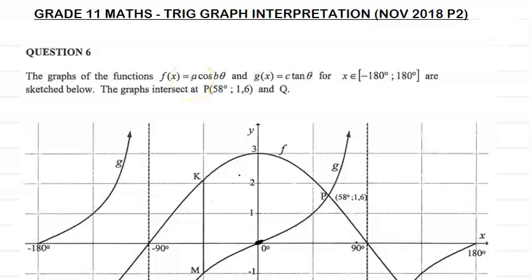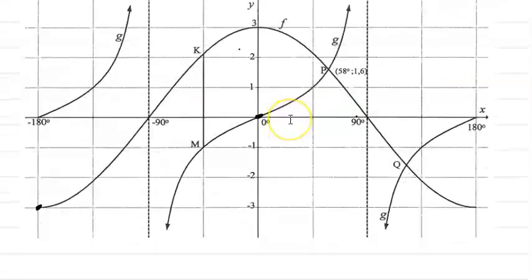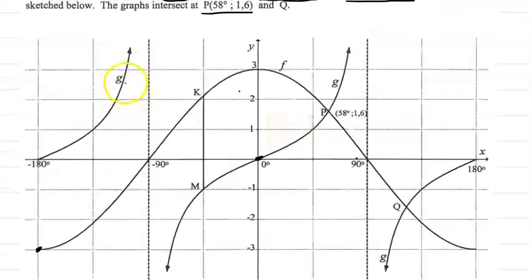In question 6 it says the graphs of the functions f of x equals to a·cos(bθ) and g of x equals to c·tan(θ) in the domain from minus 180 to 180 are sketched below. The graphs intersect at p (58°, 1.6) and q. You can clearly see that g is the tan graph and f is our cos graph in the domain from minus 180 to 180.